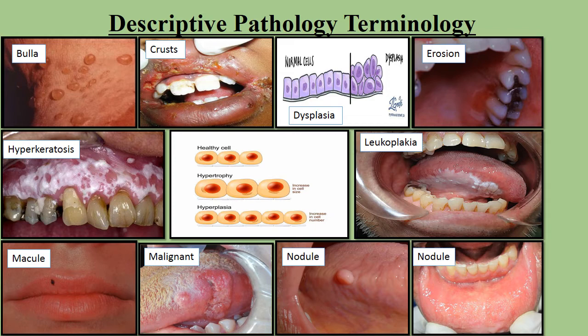Keratosis means overgrowth and thickening of epithelia. Leukoplakia means slow developing changes in mucosa — we know it from white lesions. Macule means circumscribed, non-elevated color change that can be distinguished from adjacent tissue. Malignant is anaplastic and metastatic cancer. Nodule means large, elevated, circumscribed solid mass. Papule means small, elevated, circumscribed solid mass.